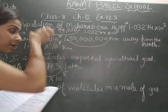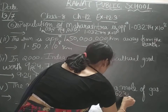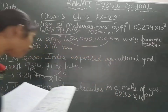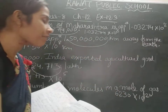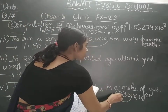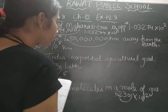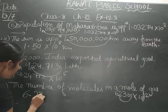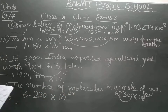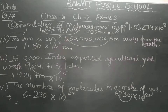The number of molecules in a mole of gas — that is Avogadro's number, which is 6230 into 10 raised to 20. We have to convert it to standard form. Consider the decimal here and shift it after 6. There are 3 digits, and we already have 10 raised to 20. So it becomes 6.230 into 10 raised to 23, because 3 plus 20 is 23. Hopefully you have understood this.